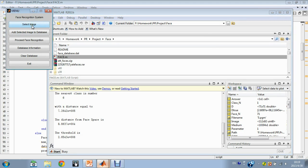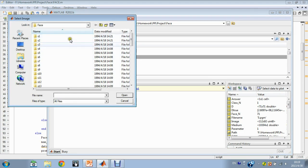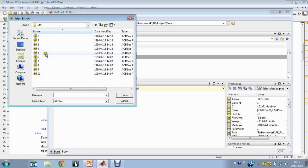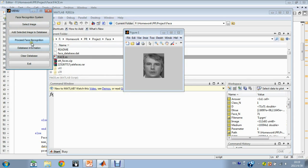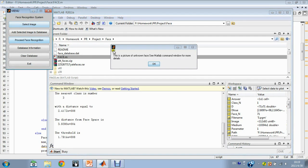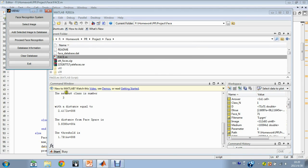Let's check again. This time select an unknown face. Say class 15. And click proceed face recognition. Okay. It says the picture is of unknown face. The nearest class is 3, but the minimal distance is larger than the threshold. So it is unknown face.